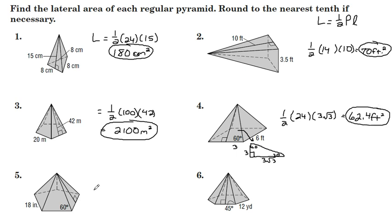Number 5, we have a pentagon again. One half times the perimeter, 18 times 5 is 90. And then I need the slant height, this distance right here.